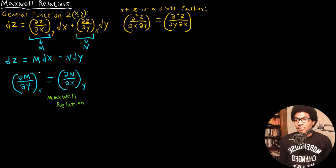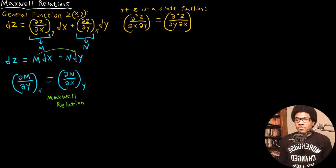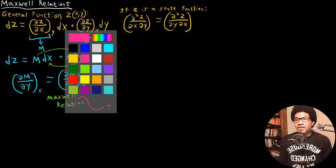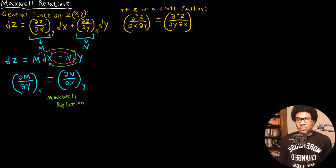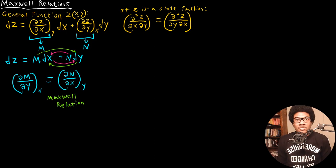You can basically derive this type of partial derivative relationship for any differential — you can call it the cross-derivative rule. An easy way to remember it: just draw a little arrow from each variable. We're differentiating M with respect to y at constant x for the first partial, and then the second partial is dN/dx at constant y. You can always draw arrows from the main variable to each changing differential in order to remember how to derive each of these Maxwell relations.